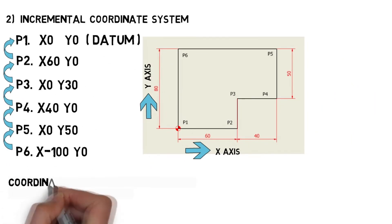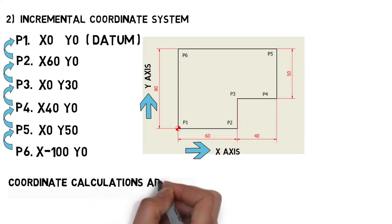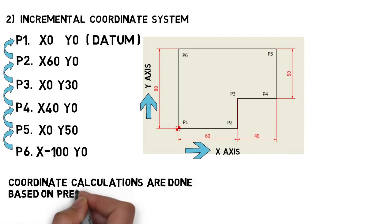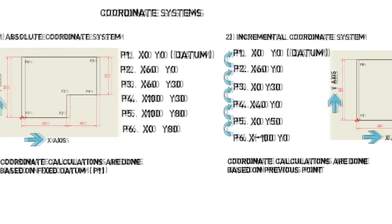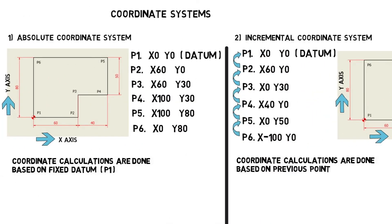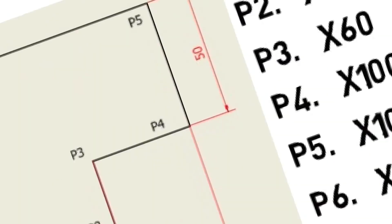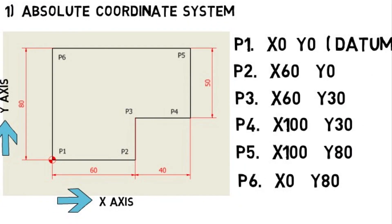In incremental coordinate system, coordinates are calculated from the previous point. When we compare both, absolute coordinate system is having a fixed datum and incremental coordinate system is having a floating datum. You can choose any method for creating the program. But,